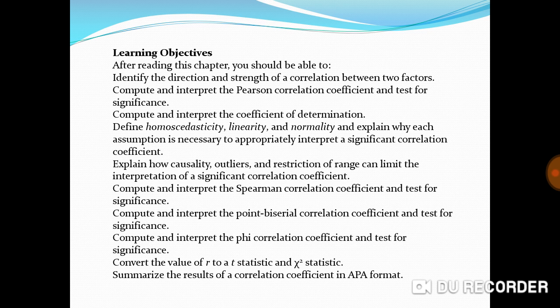Compute and interpret the phi correlation coefficient and test for significance. Convert the value of r to a t statistic and chi-squared statistic. Summarize the results of a correlation coefficient in APA format.